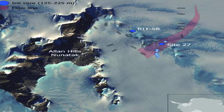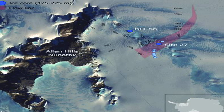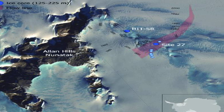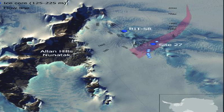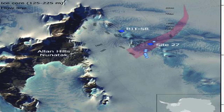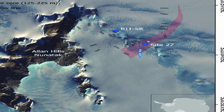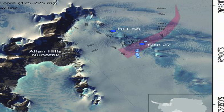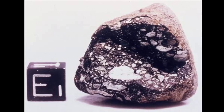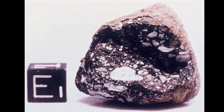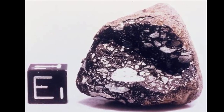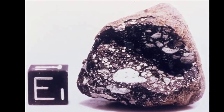The meteorite has been severely shocked, as shown by the presence of maskelynite, undulose extinction in the pyroxene, and occasional areas of apparent shock melting. No signs of weathering were observed.